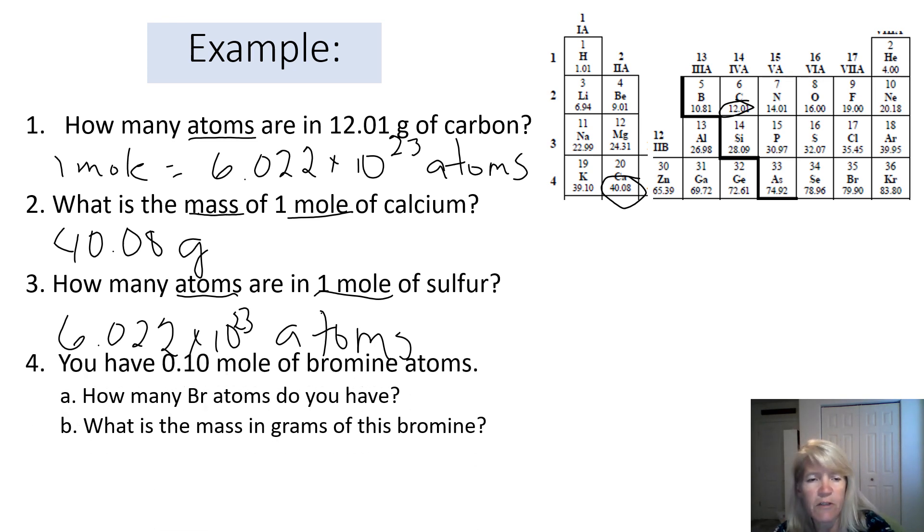Here's our question here. If you have 0.1 mole of bromine atoms, so now not a whole mole, 0.1 mole, a tenth of a mole. So how many bromine atoms would you have? You have 0.1 mole of bromine atoms. Well if one mole is 6.022 times 10 to the 23rd, a tenth of that has got to be 6.022 times 10 to the 22nd atoms.